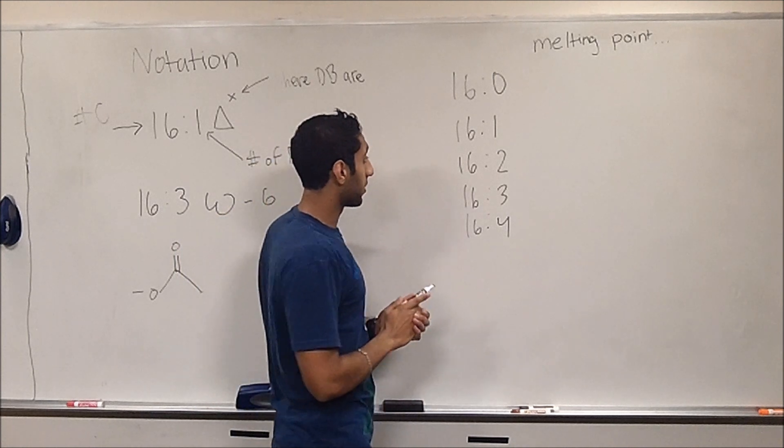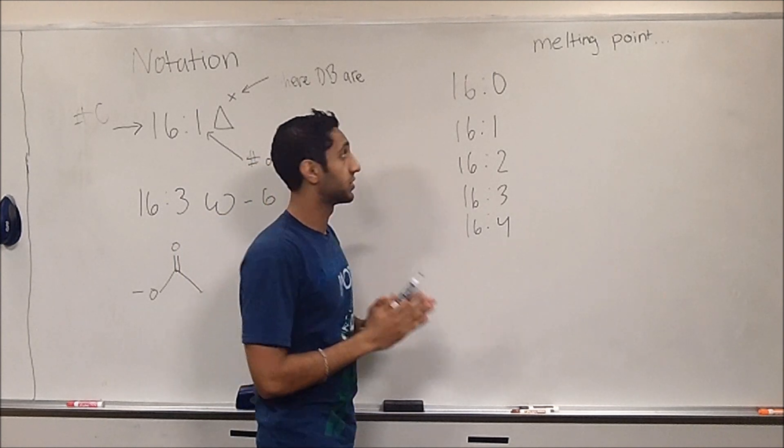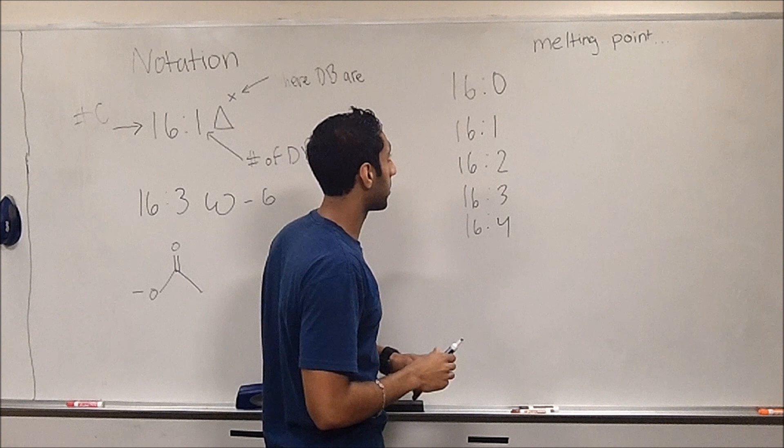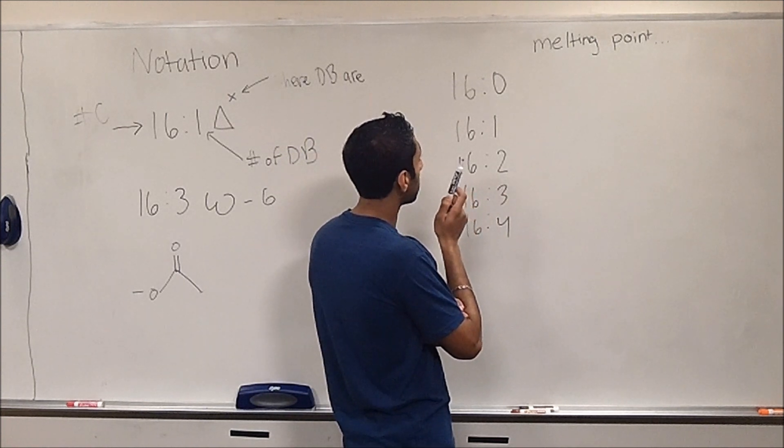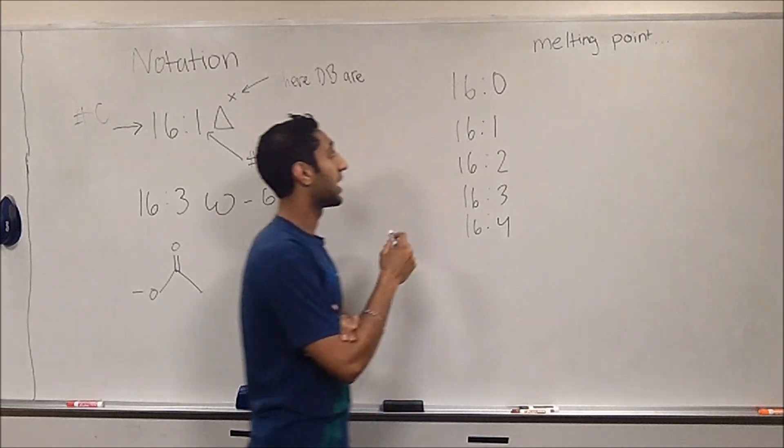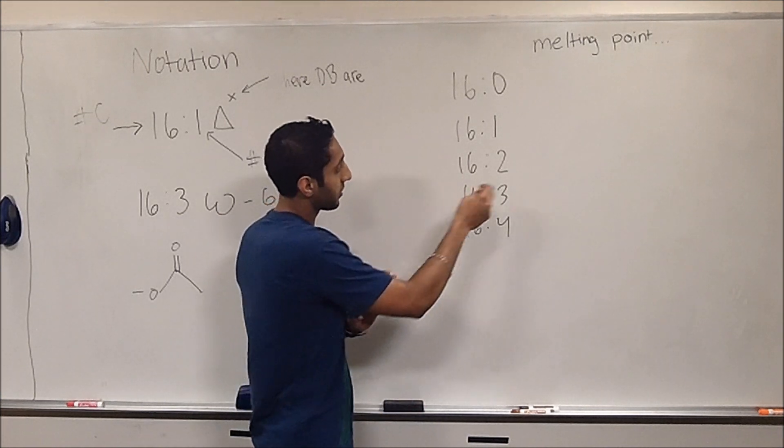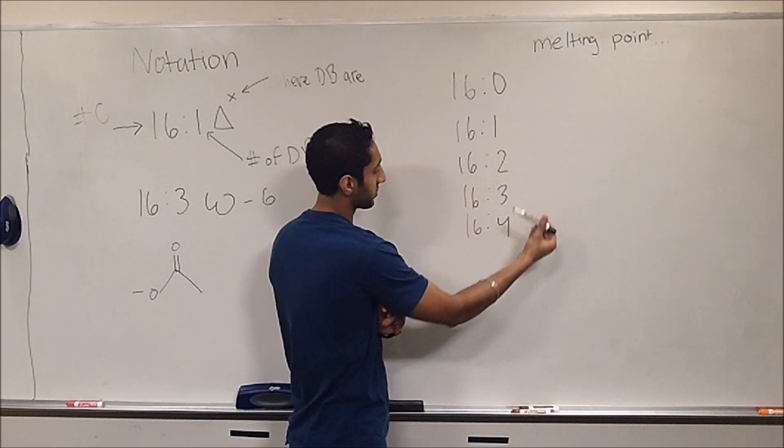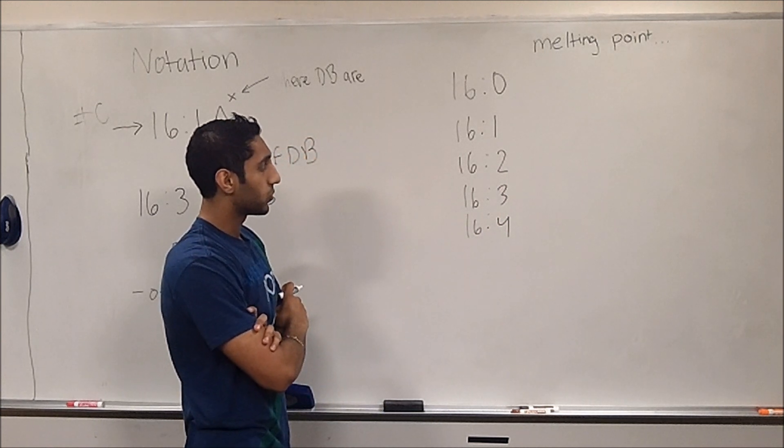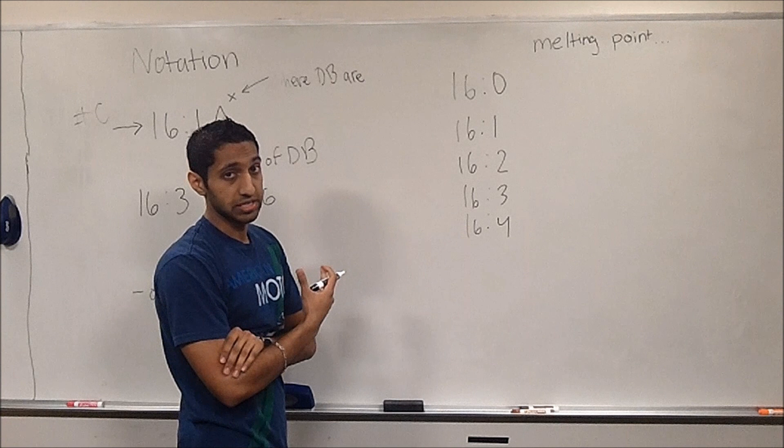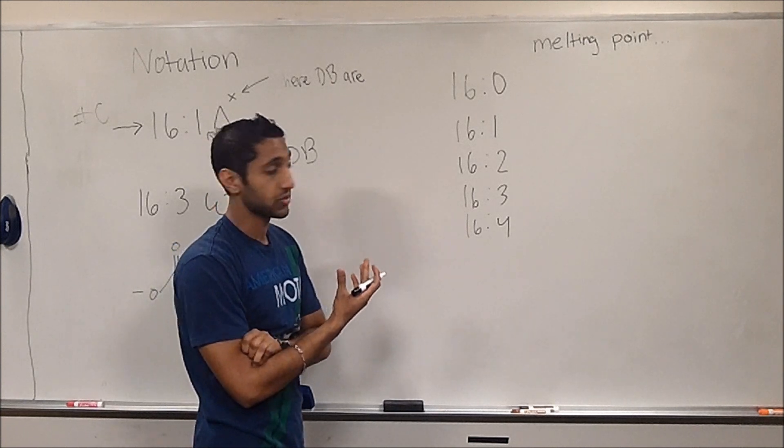Now that we understand the notation for this, we can go ahead and solve the problem. For the list of fatty acids that we have, we see that we're increasing the number of double bonds in the fatty acid chain. So it'll either increase or decrease, but which one's the correct answer?